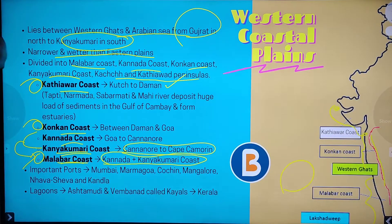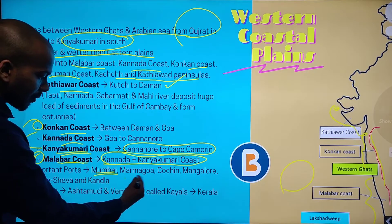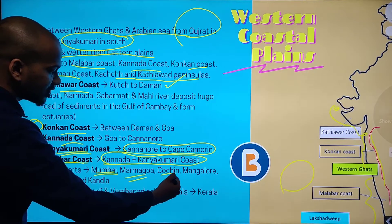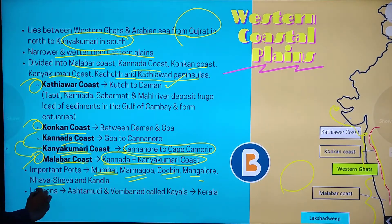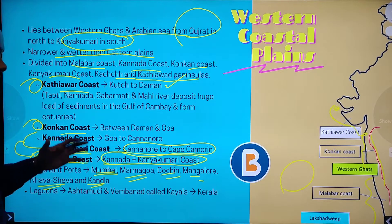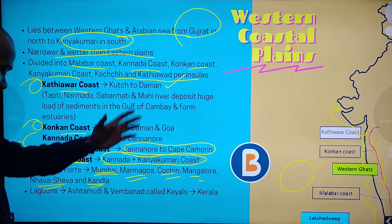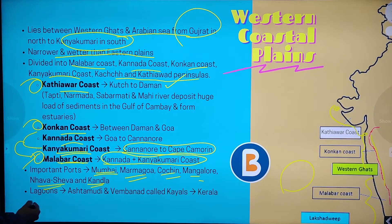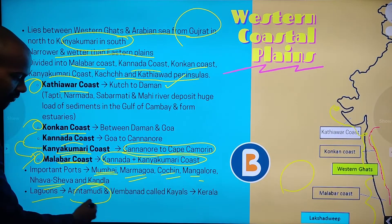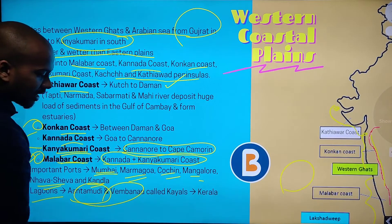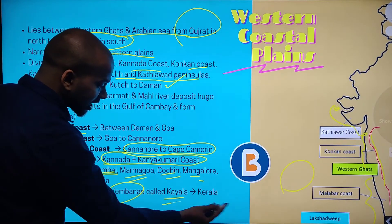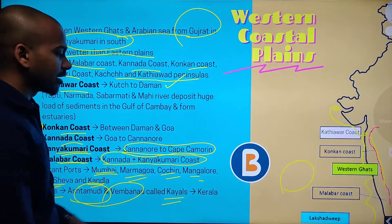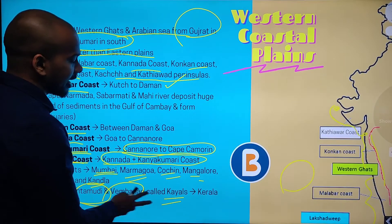There are important ports here: the Mumbai port, Marmagoa, Cochin, Mangalore, Nhava Sheva, and Kandla. These are the important ports in the western coastal plain. There are also important lagoons like Ashtamudi and Vembanad lakes, and they are called Kayals — Kayal means lake in Kerala, in the Malabar region.